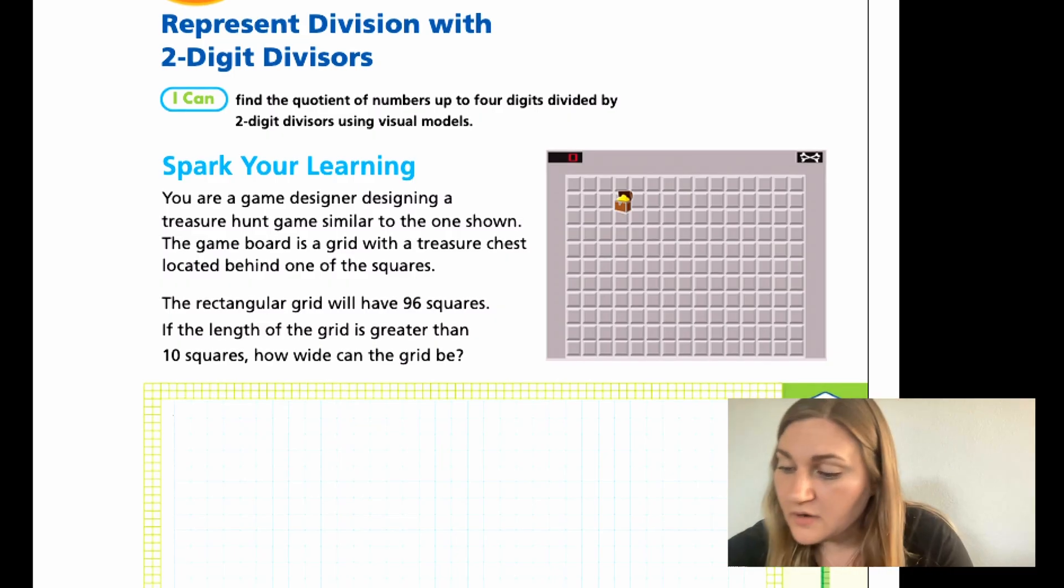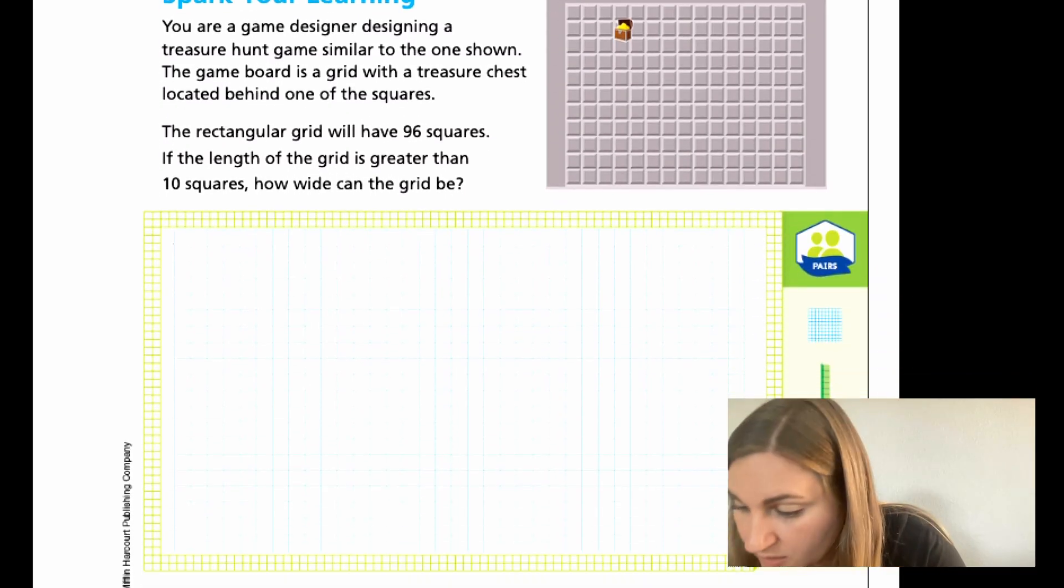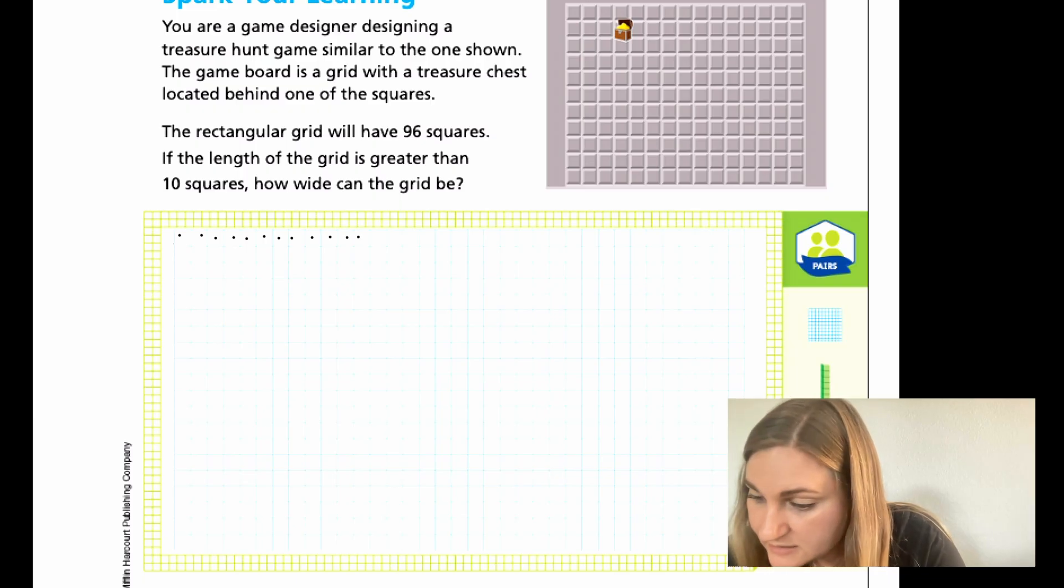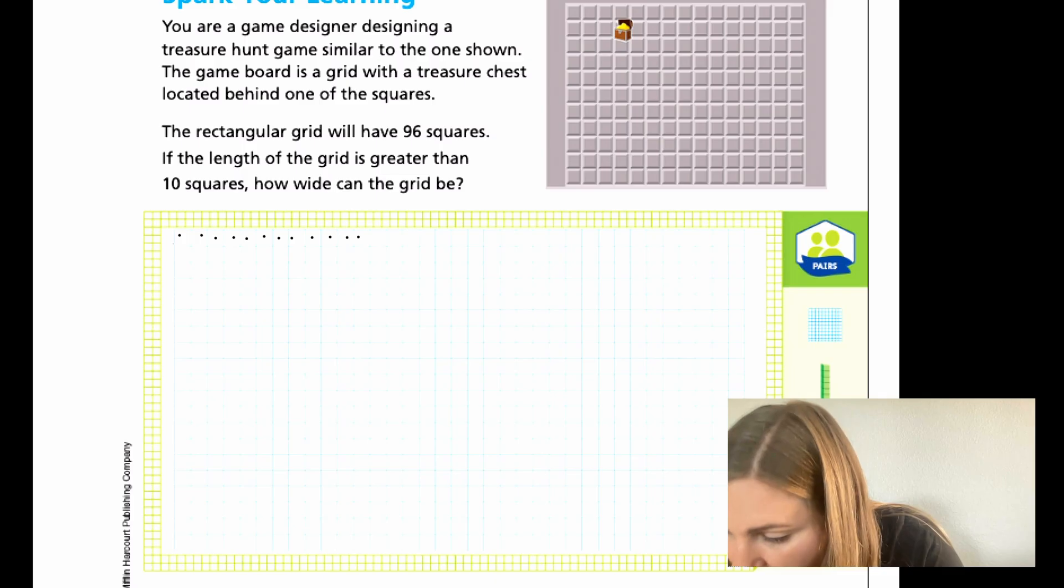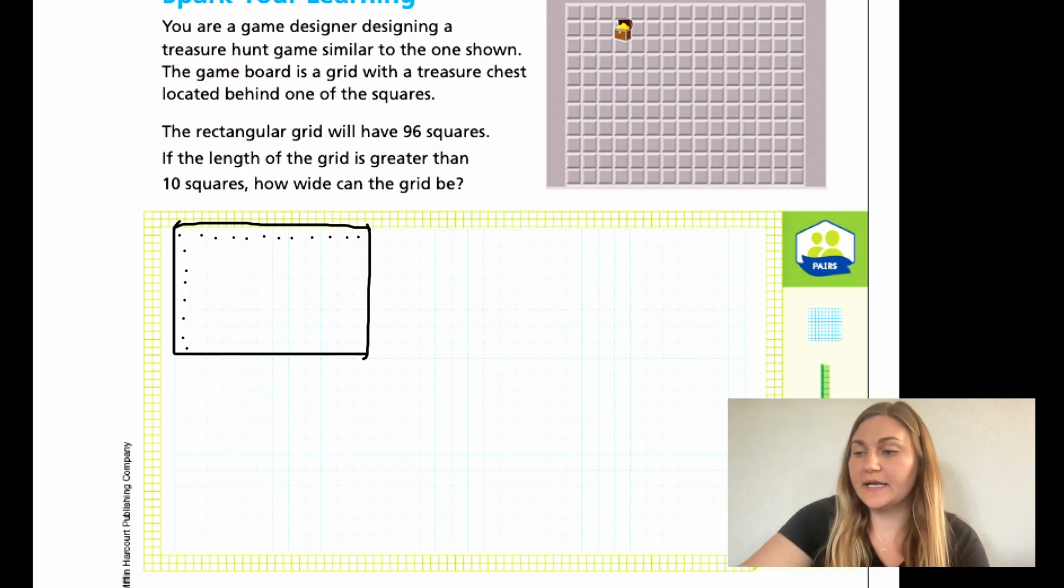All right. So, I'm going to count 12 across and then 8 down and create my grid. So, 1, 2, 3, 4, 5, 6, 7, 8, 9, 10, 11, 12. And then 8 down. So, 1, 2, 3, 4, 5, 6, 7, 8. So, here is my 12 by 8 grid.